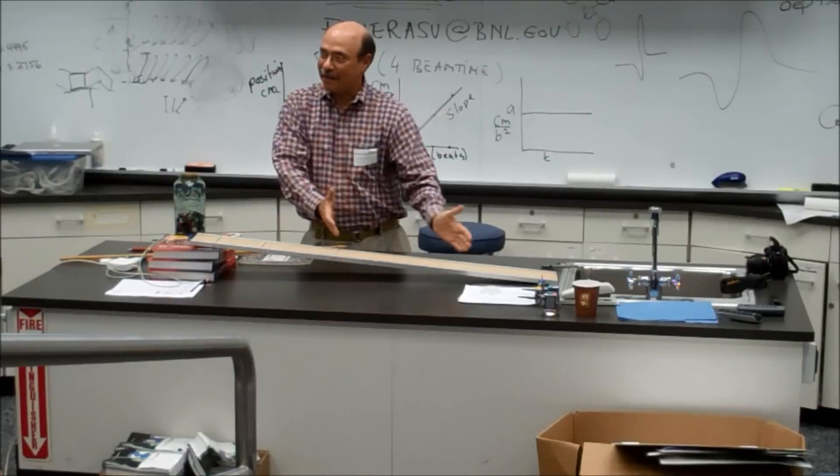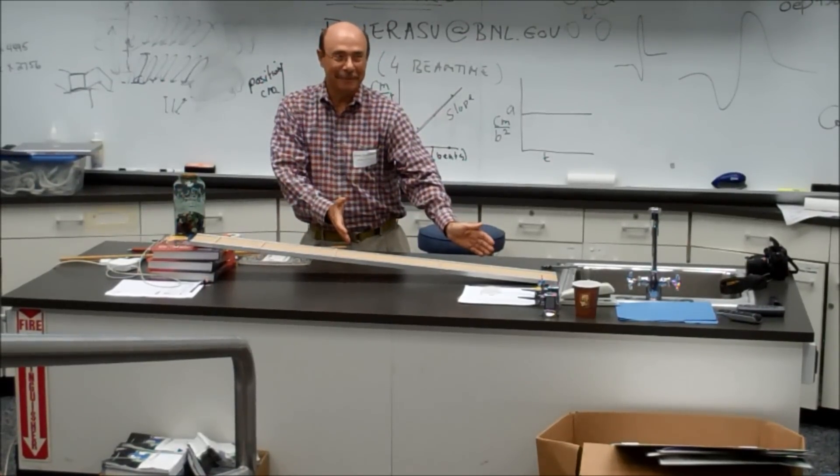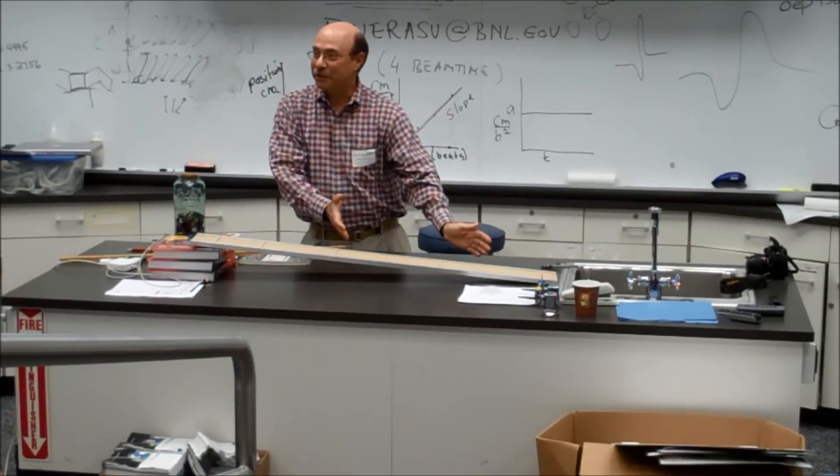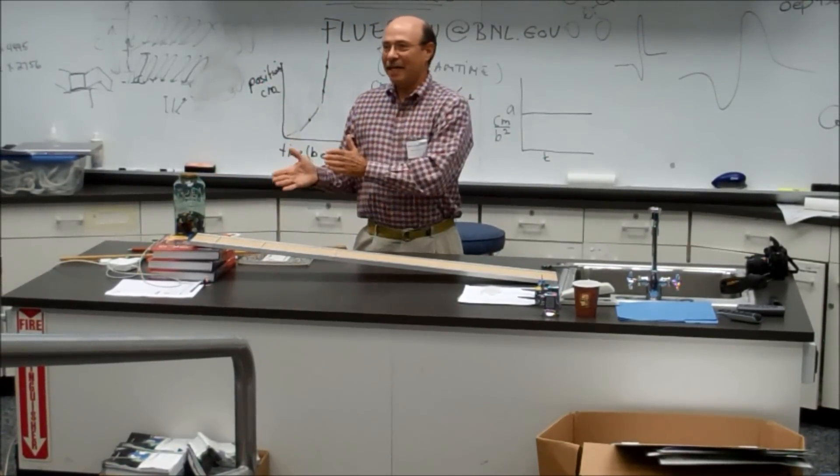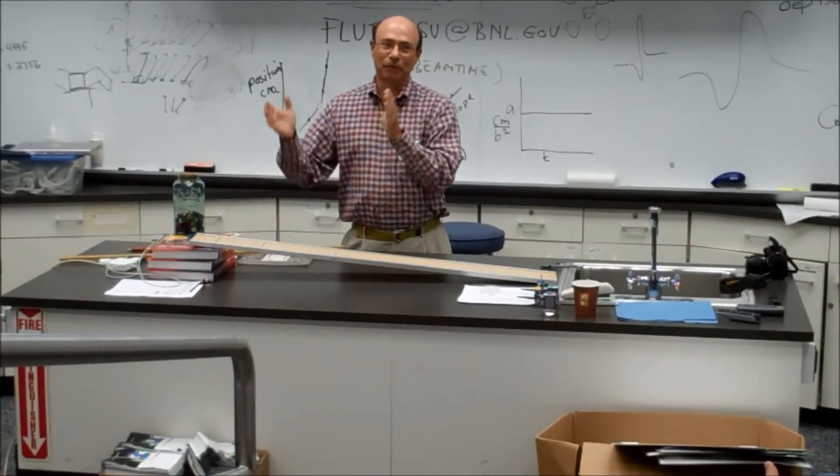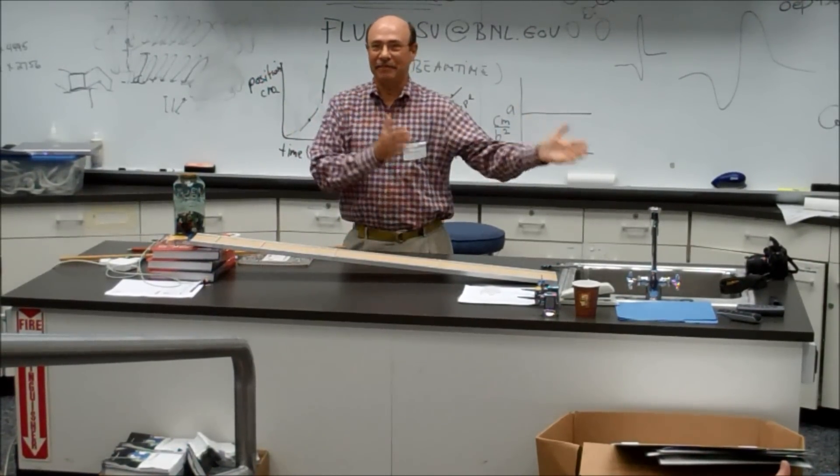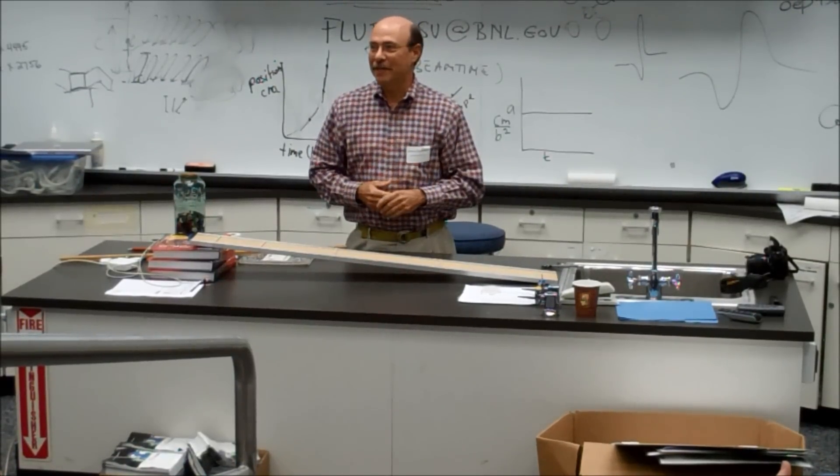And then when you go and measure these things out, does everybody know what that ratio is? Of the odds? The odd integers. So when something's accelerating, in the first second, if it moves one unit in length, in the second second it'll roll three units during that second second, five units during the third second, seven units during the fourth second, and so on and so forth.